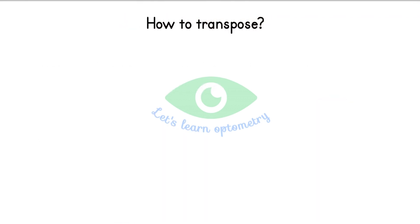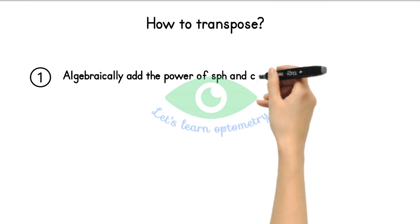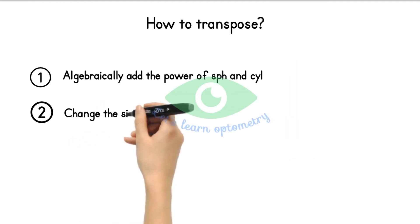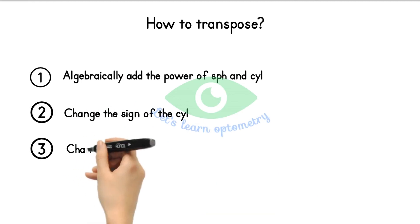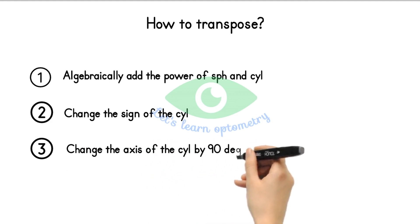How to transpose? There are only three simple steps involved in this. First we need to algebraically add the spherical and cylindrical powers. Then the second step we need to change only the sign of the cylindrical value without changing the power. The third step we need to change the axis of the cylindrical value by 90 degrees.